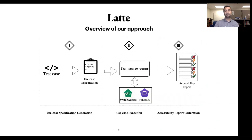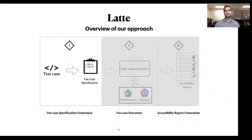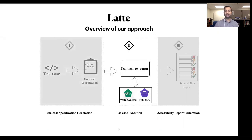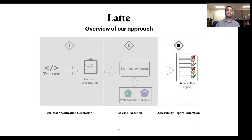Here is an overview of Lotte's process, which consists of three parts. First, Lotte generates a use case specification from the input test case — a representation of the use case with accessibility-related information. Then, Lotte executes the use case specification with an assistive service like TalkBack or Switch Access. This is the main part that our approach differs from other techniques, as Lotte actually interacts with the device using an assistive service, just like users with disabilities do. Finally, Lotte produces a report containing the accessibility failures and warnings found during execution.